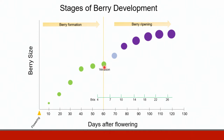P. viticola can cause infections throughout berry development, but the susceptibility of the berry changes as the berries reach the ripening phase. As the berries ripen and build sugars, they actually become less susceptible to downy mildew infections.